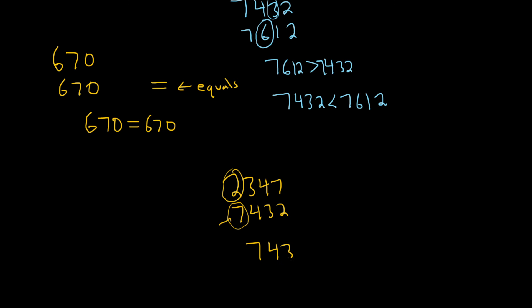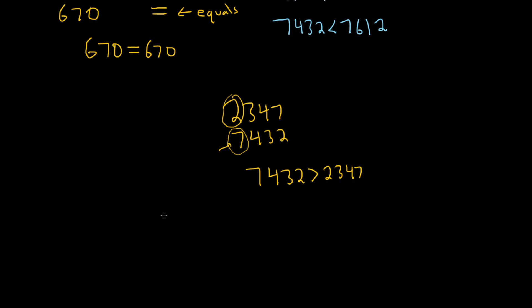So 7432 is bigger than 2347. Or greater than is the correct word to say. And you can write it backwards. The number on the top is smaller. So you would say 2347 is less than 7432.